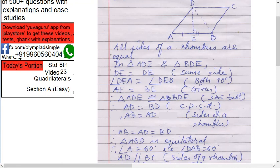Therefore what? AD equals BD by CPCT. Corresponding parts of congruent triangles. So you have now AD equals BD. But also you know one thing. AB equals AD by sides of rhombus. So what do you have now?